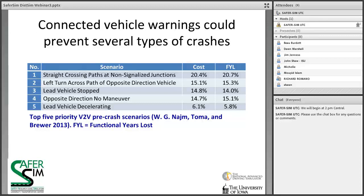Recent work on connected vehicles has shown that providing connected vehicle warnings is another way to mitigate or prevent multi-vehicle crashes, and it creates another opportunity to study driver interactions with a warning system. It's a very interesting case because you may not even see the other vehicle when the warning is given — it could be obstructed by a truck or be three cars ahead of you.